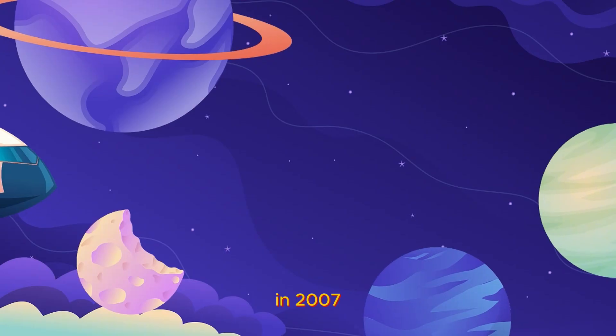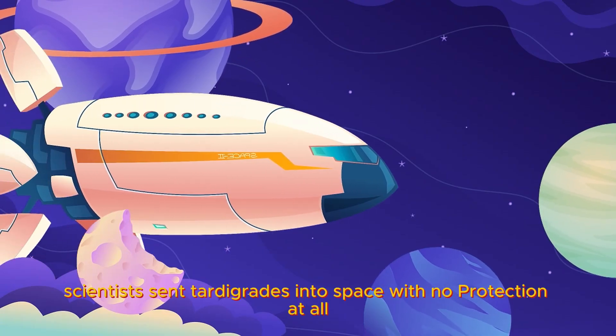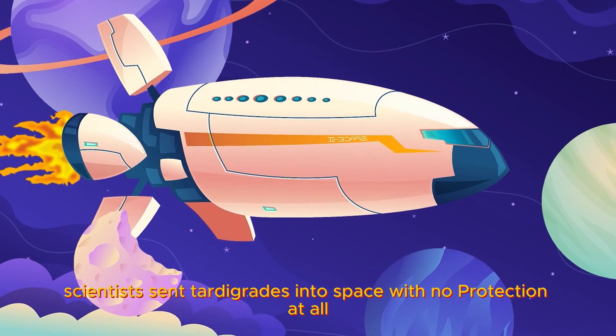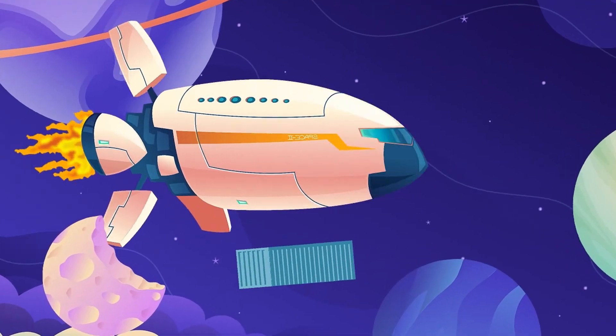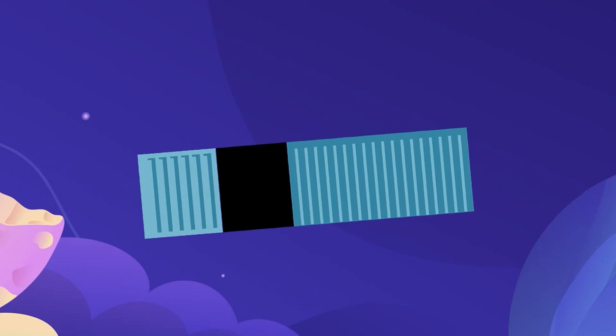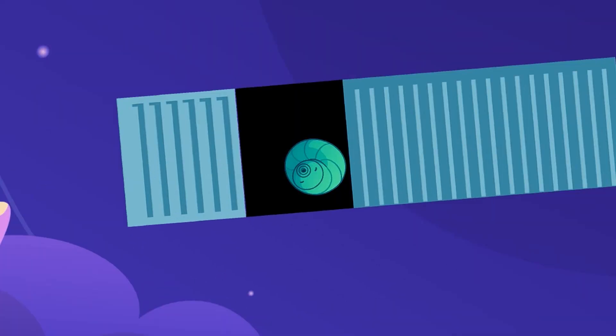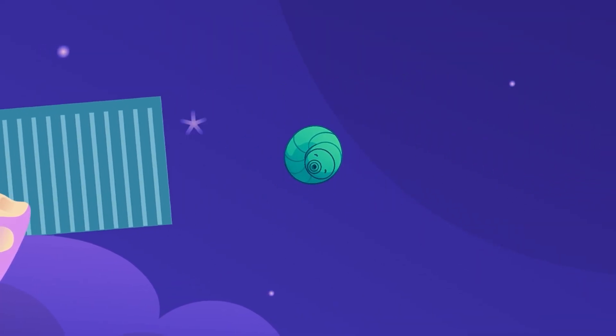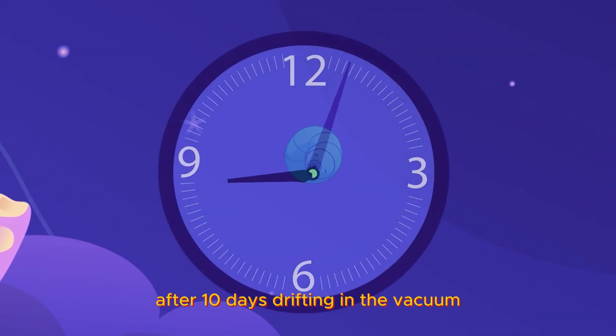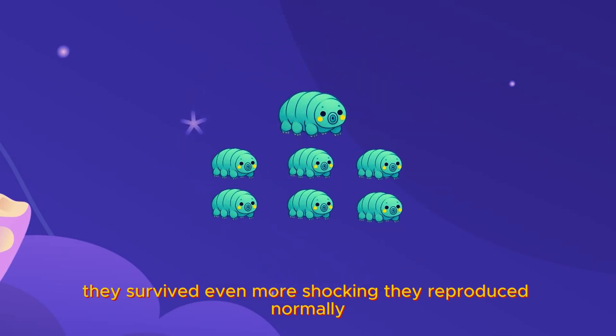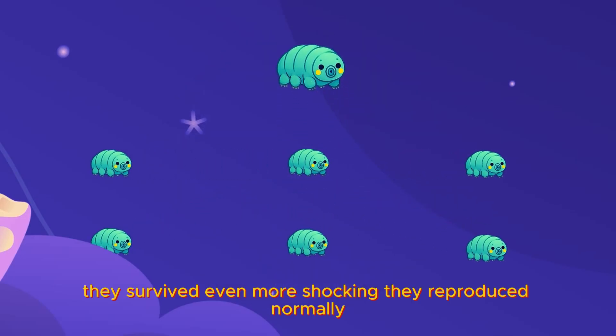In 2007, scientists sent tardigrades into space with no protection at all. After 10 days drifting in the vacuum, they survived. Even more shocking, they reproduced normally.